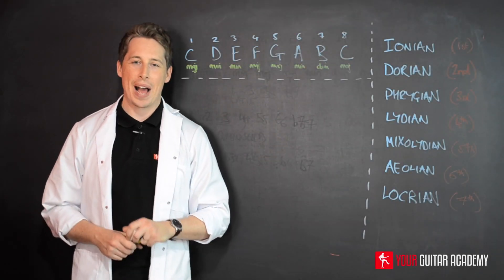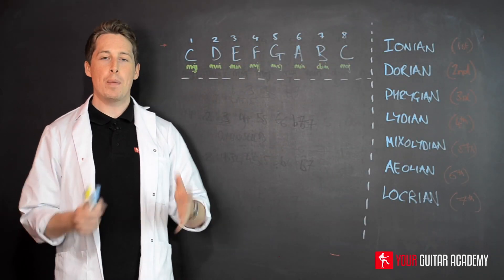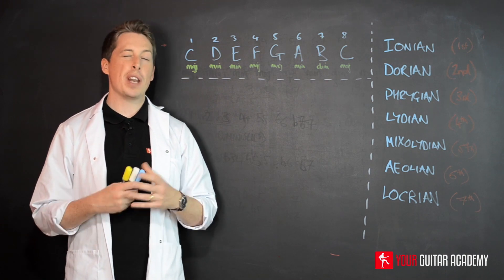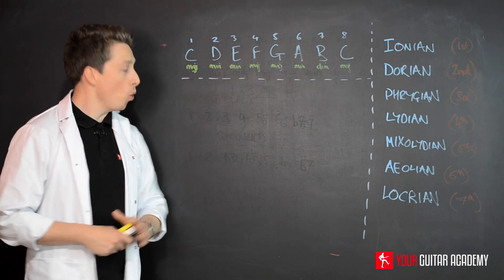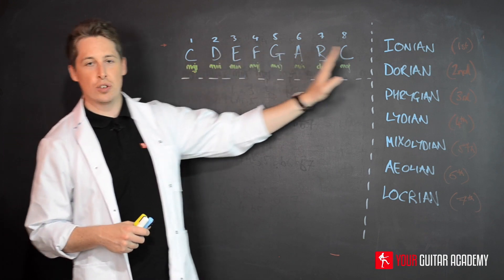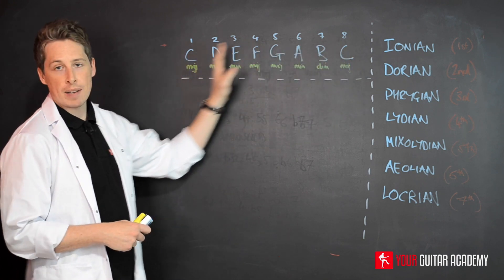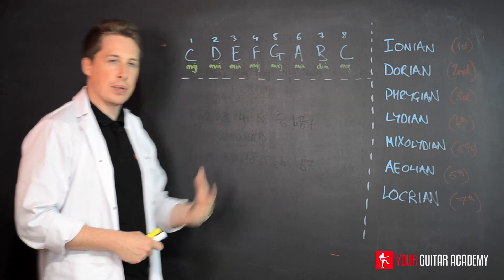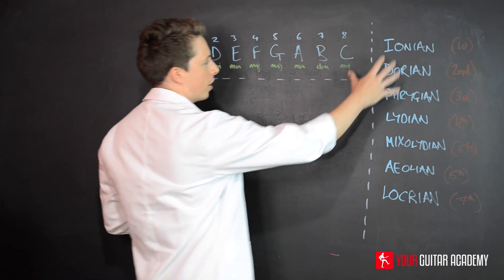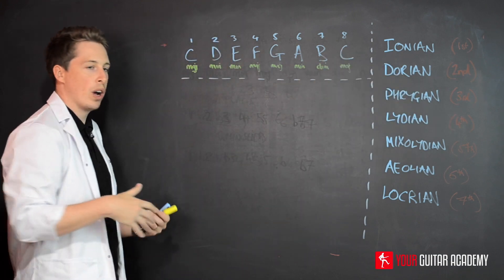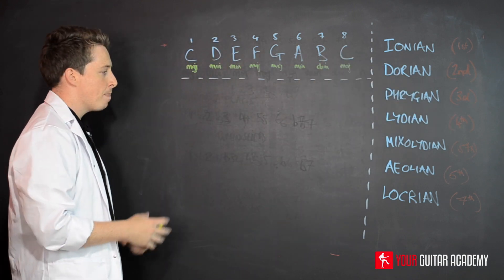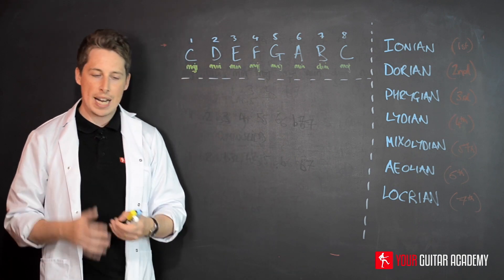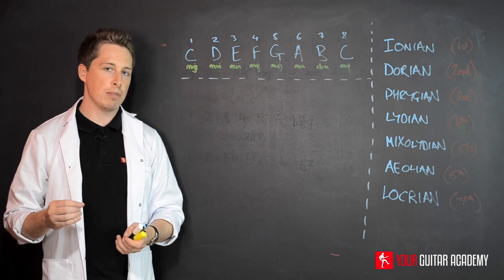Welcome back to this mode study. What we're going to be doing now is grouping the modes. This will make sense when we come back to the original scale and its harmonization, because each mode is either a major mode, a minor mode, or a diminished mode. By grouping them into their own categories we start to really understand how to use each mode.